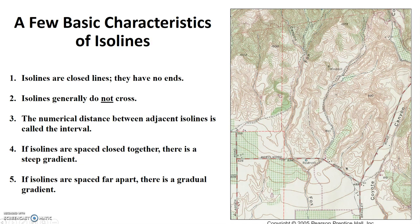Second, isolines do not generally cross. Think about it — it is generally not possible for a particular point to simultaneously have two temperatures or two elevations. One rare exception would be for elevation if there is a sheer cliff, where isolines might merge together, but that's the rare exception. Third, the numerical distance between adjacent isolines is called the interval. The difference between two adjacent contour lines is referred to as the contour interval. Generally, the interval will remain constant throughout the map.